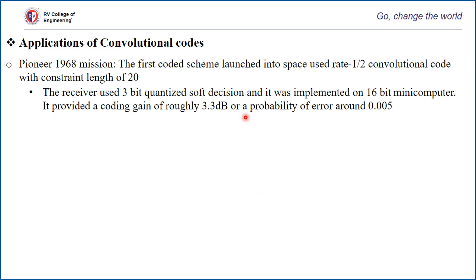Looking into the applications of convolution codes: as early as 1968, the Pioneer Mission, which implemented space probes to study solar wind, solar magnetic field, and cosmic rays, used a rate-half convolution code with a constraint length of 20. With a constraint length of 20, there were 2^20 states in the encoder. They used sequential decoding at the receiver, with a coding gain of roughly 3.3 dB, which produced a bit error probability of around 0.005. This was one of the earliest practical introductions of convolution codes.